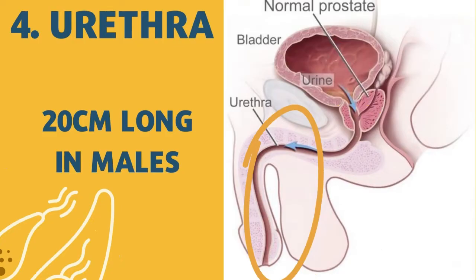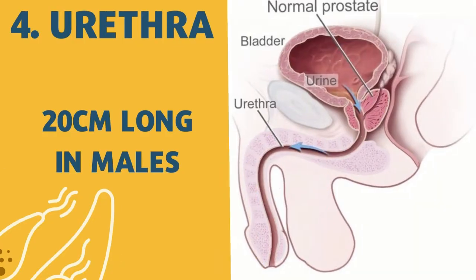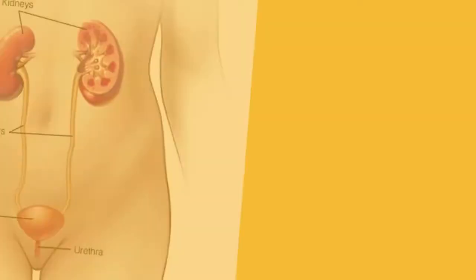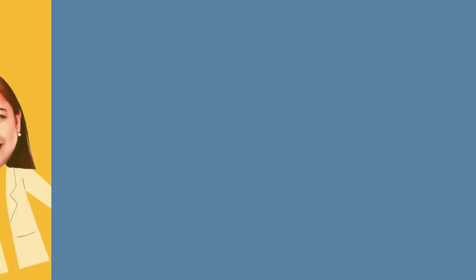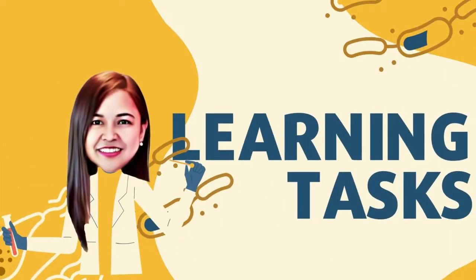The fourth one is the urethra, which is 20 cm long in males and only 5 cm long in females.